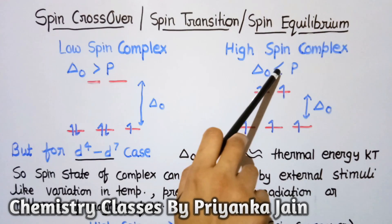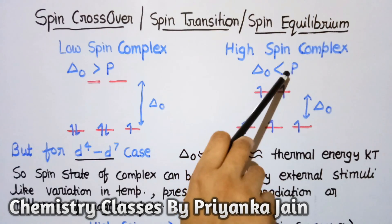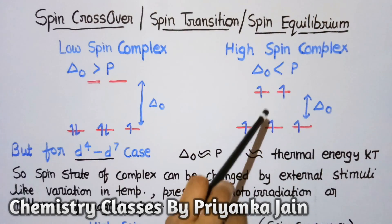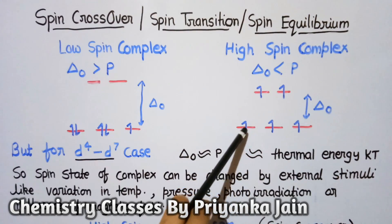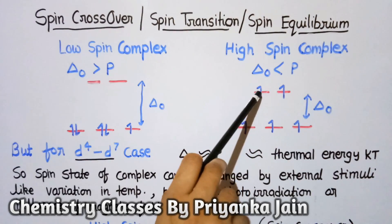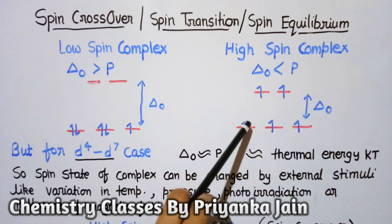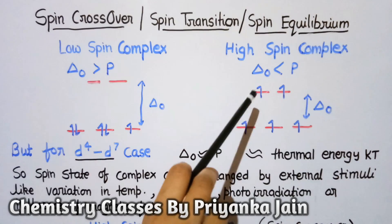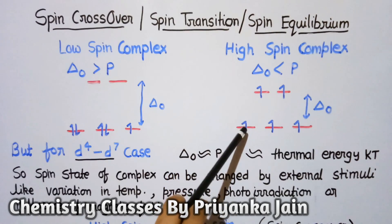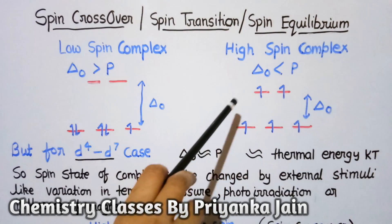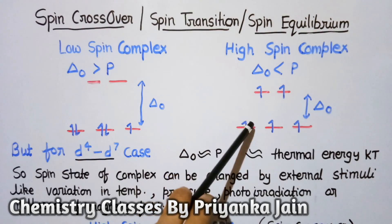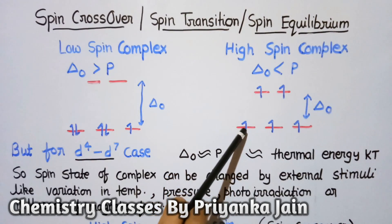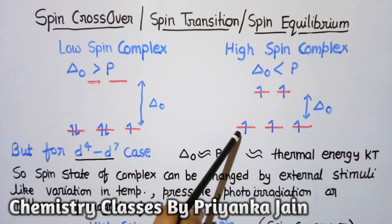High spin complexes are formed when Δo is lower than the pairing energy P. This smaller gap means electrons will jump into the eg level rather than pairing. As a result, the number of unpaired electrons is higher, and the magnetic susceptibility or magnetic moment is higher in such complexes.